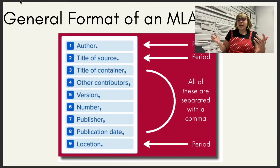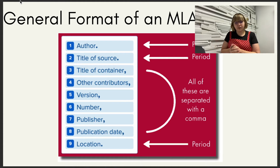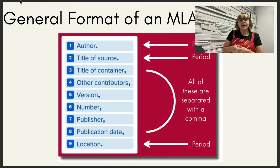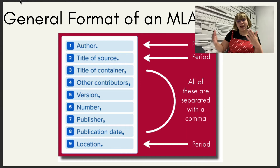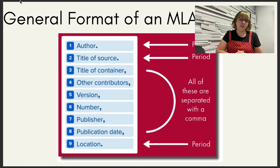MLA follows a general format — you start with the author, title of the source, title of container, any other contributors, a version, and a number if you have it, a publisher, publication date, and location. Depending on the type of source you are citing, you might have some of this information and you might not. I'm going to go through a couple of examples now to show you what it looks like with specific different types of sources.